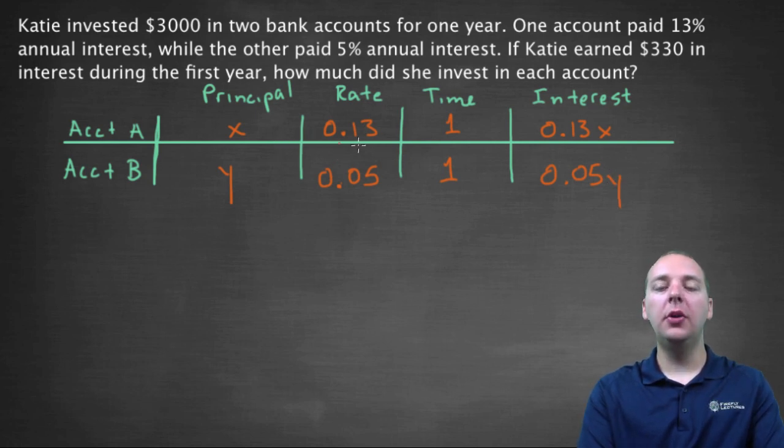Now what can we do with this? What do we know? Well we know some things from the exercise here. We know that she invested three thousand dollars total. Well, what would equal three thousand? Well I think it would be how much she put in account A plus the amount she put in account B. So from that I think we can write X plus Y has to equal three thousand.